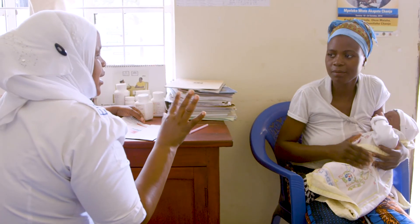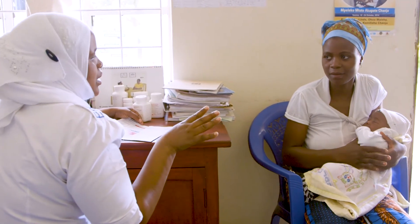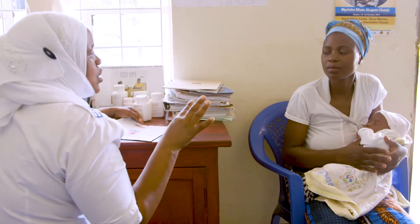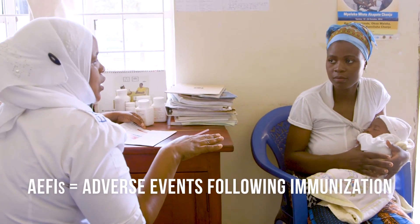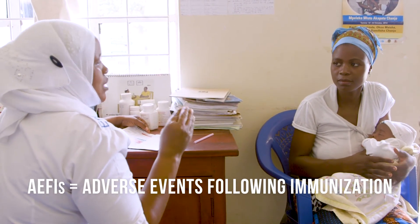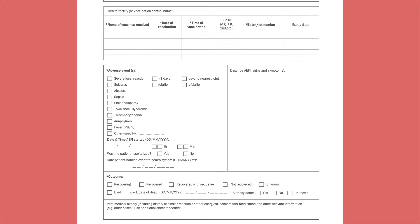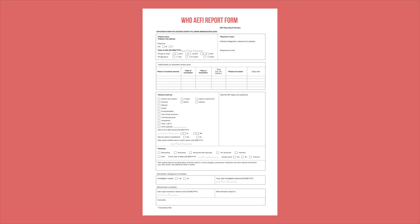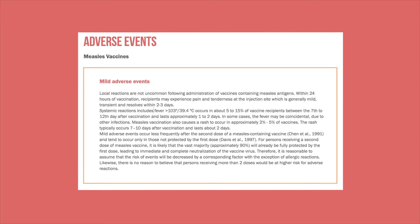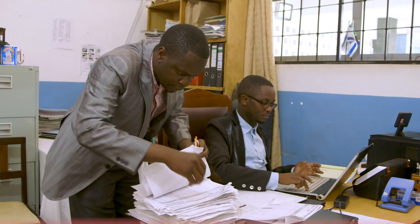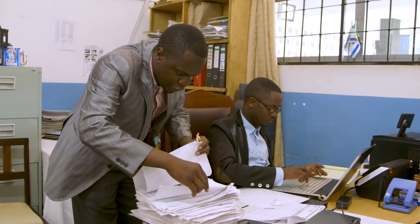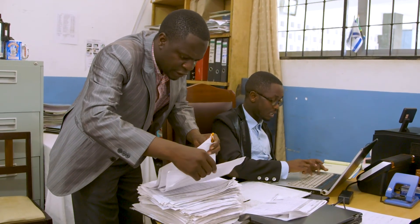We just looked at how to analyze data about vaccine-preventable diseases. It is also important to analyze data about adverse events following immunization, or AEFIs. This lets district and higher levels investigate the likely causes of these events by specific vaccine. For example, they might compare the expected rates of adverse events in vaccinated and unvaccinated individuals. Analysis can also facilitate the investigation and response to serious adverse events.